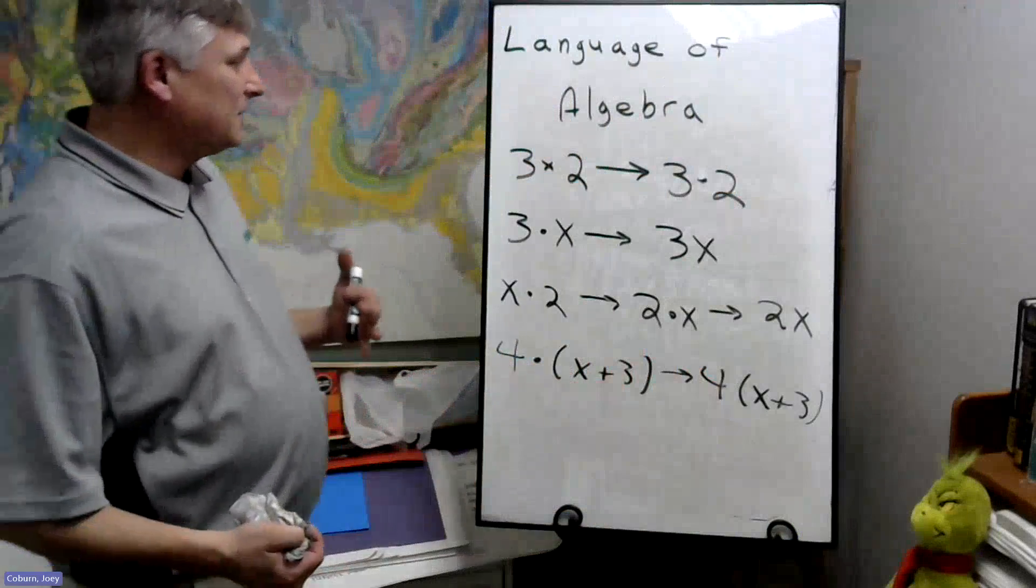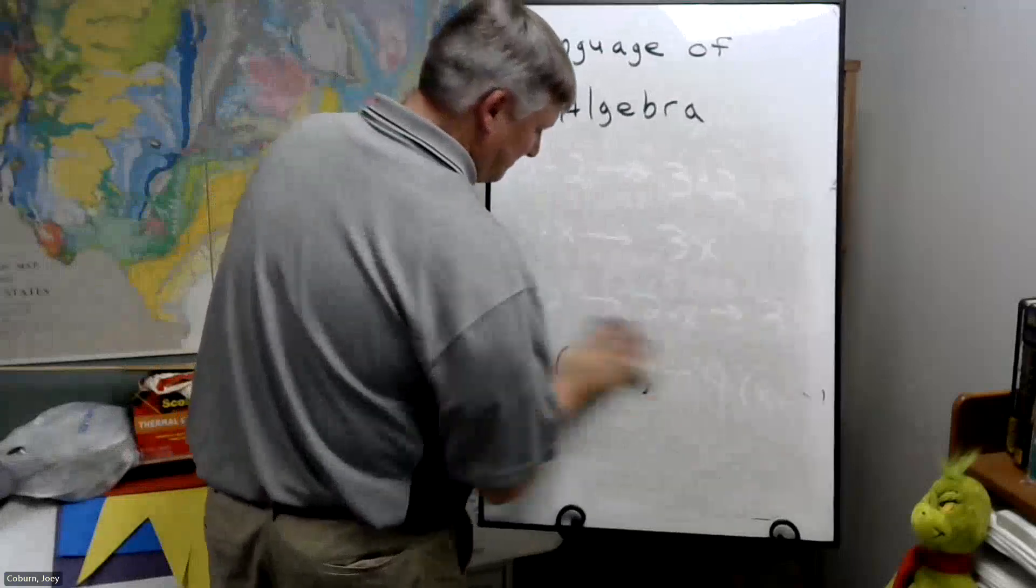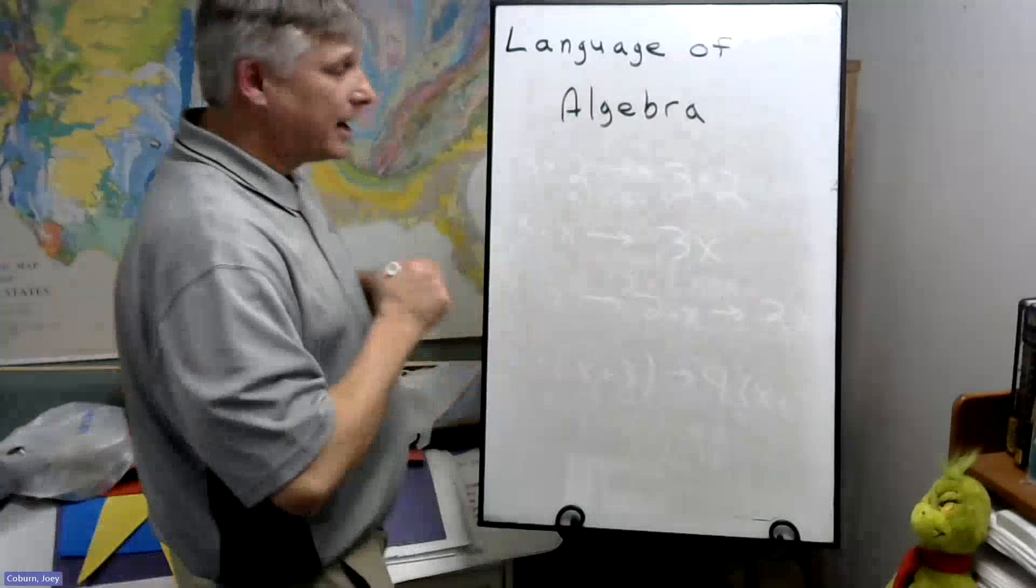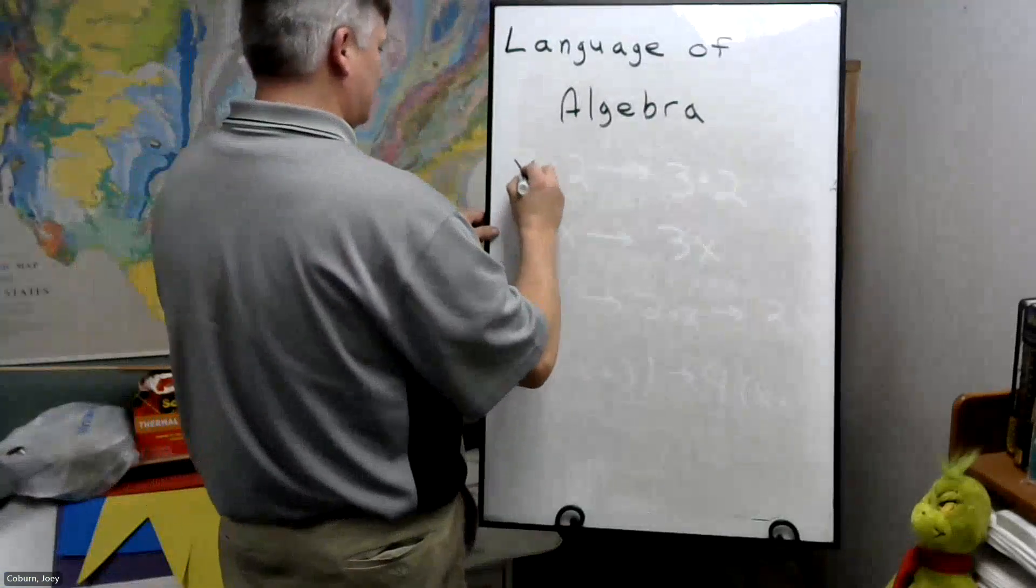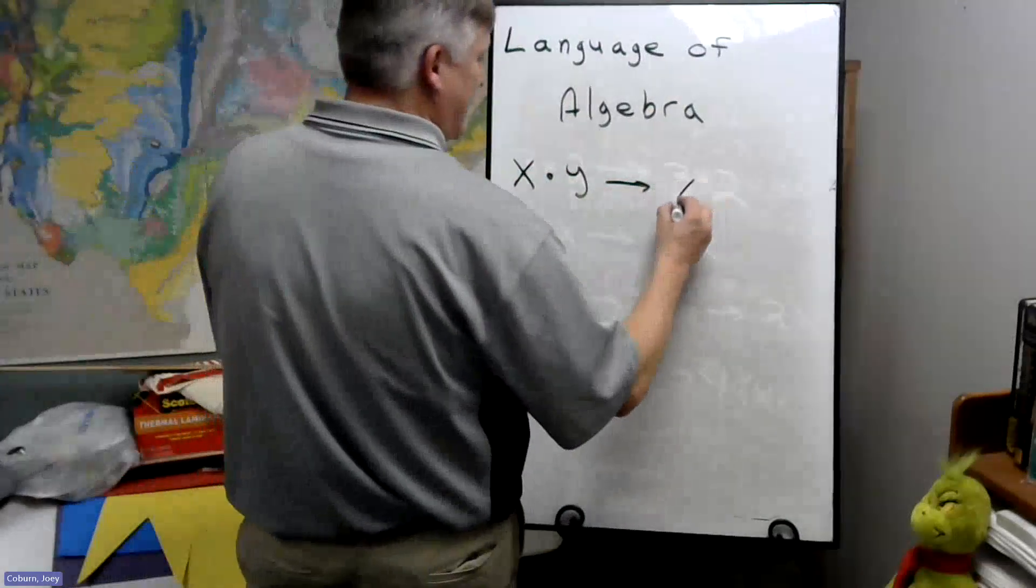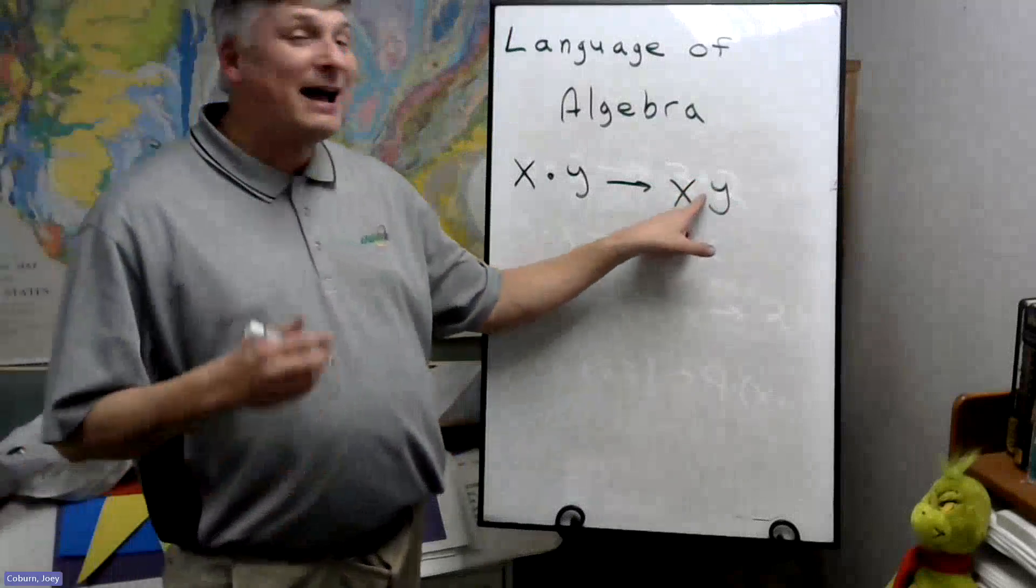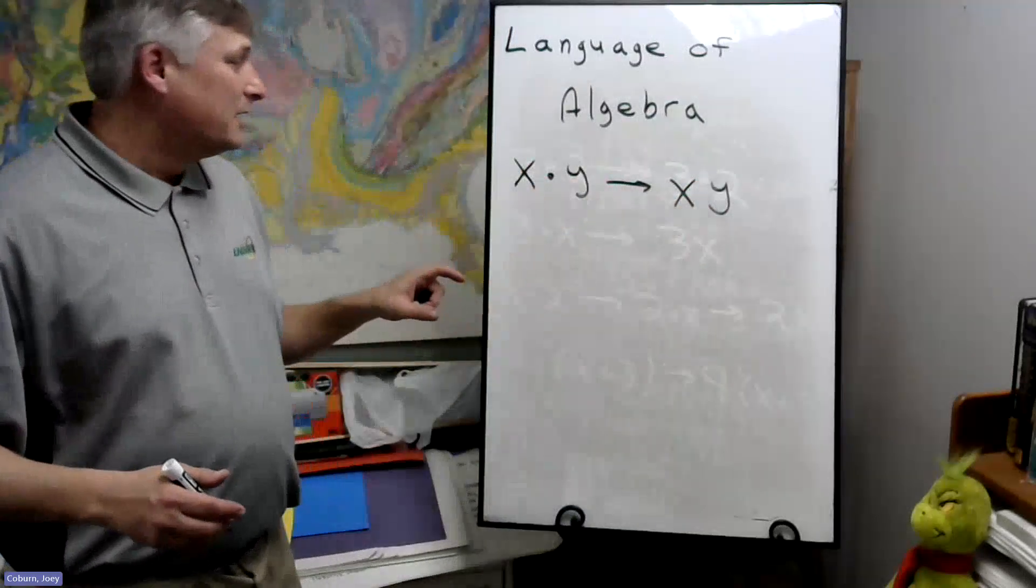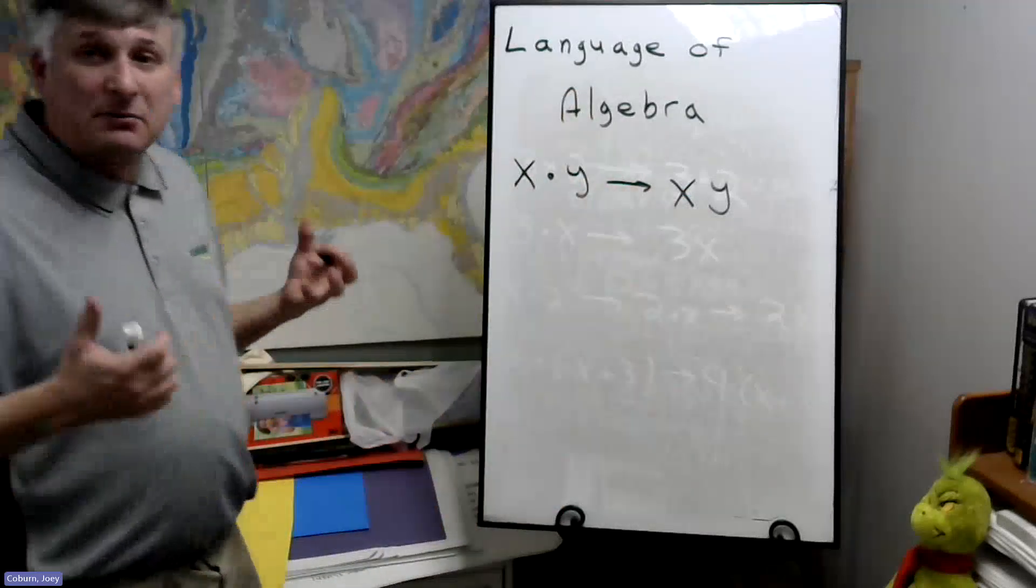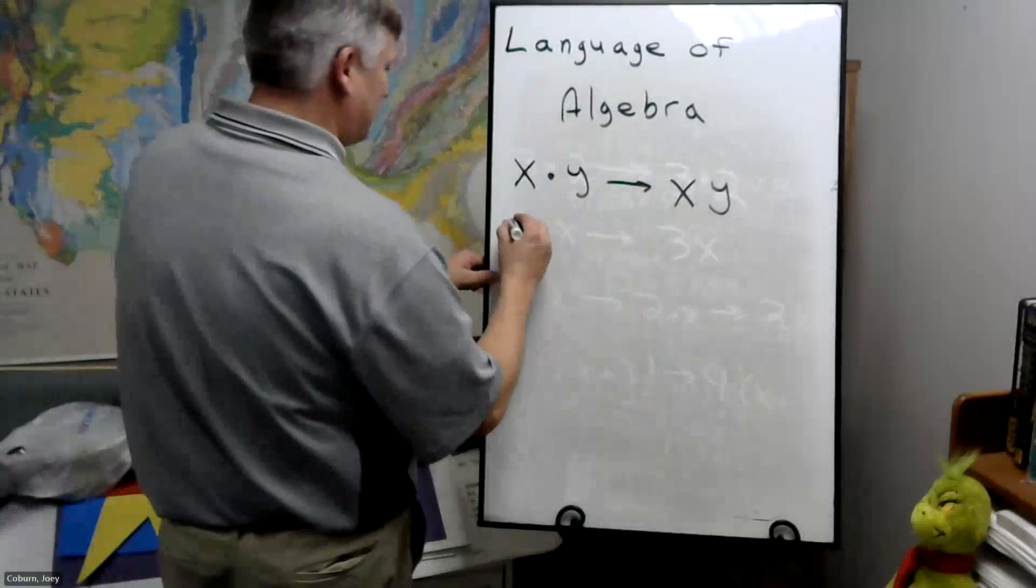So if multiplication, this is some of the changes you'll find. A variable times variable, X times Y, we will write this as X next to Y. Again, we'll hide the multiplication sign. And I guess it's just faster, it's more efficient. So that's what's going on.